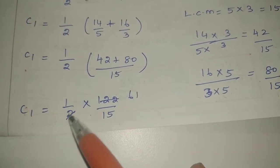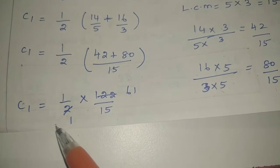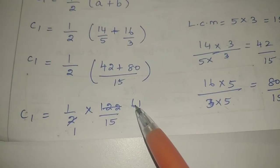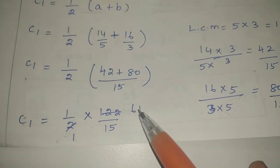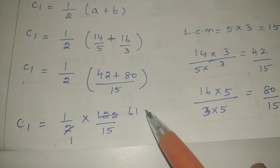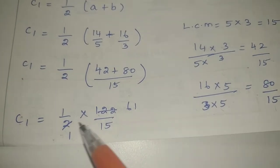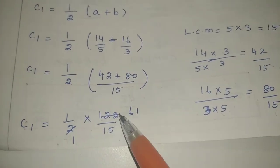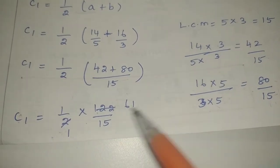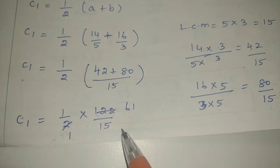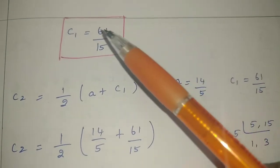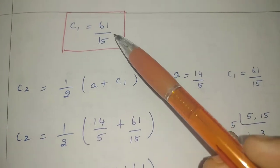Now we have to do multiplication — half into 122 by 15. We do cross-cancellation: 2 into 122, cancel the 2. So 1 into 61 is 61, and 1 into 15 is 15. So C1 is equal to 61 by 15.